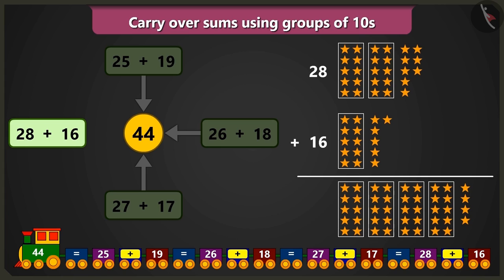So here also, there are 14, which means 1 tens and 4 ones. So 1, 2, 3, 4 tens and 4 ones, that are a total of 44.